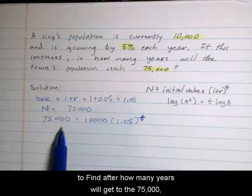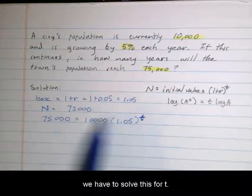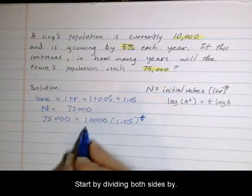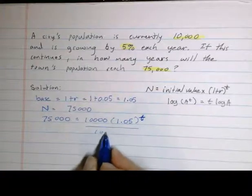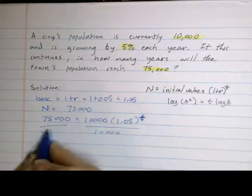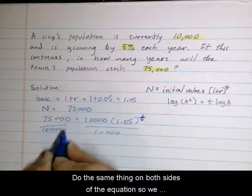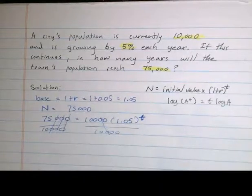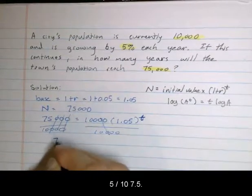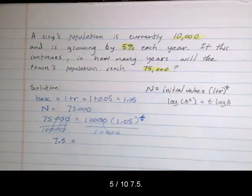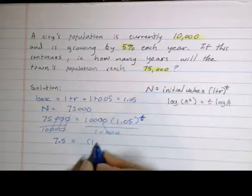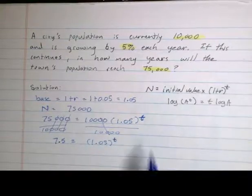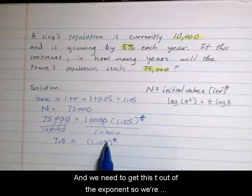We'll start by dividing both sides by 10,000, doing the same thing on both sides of the equation to keep it balanced. So 75 divided by 10 is 7.5, which equals 1.05 to the t. We need to get this t out of the exponent.